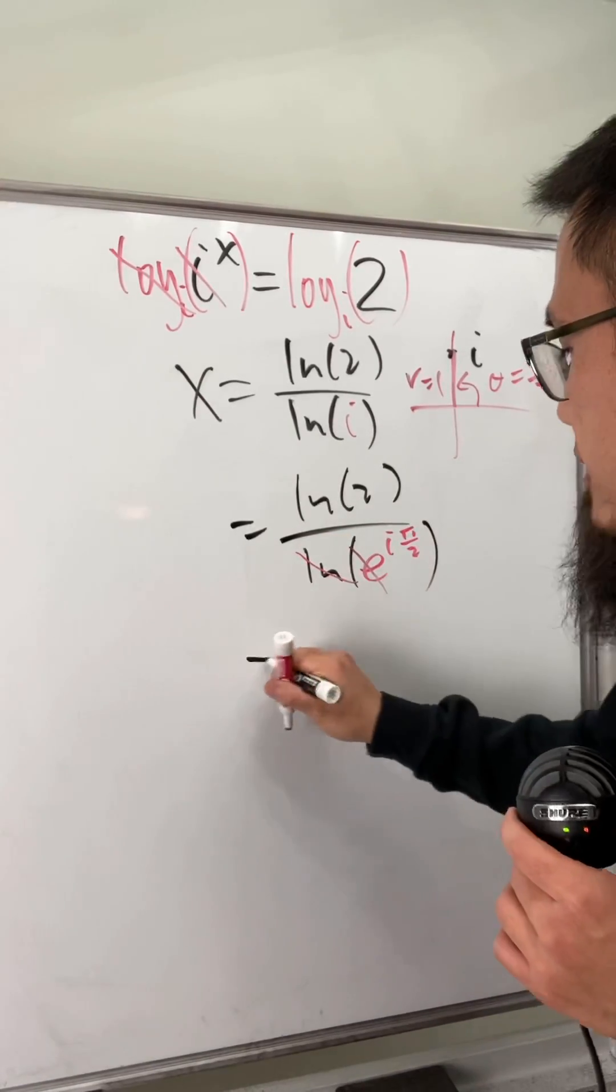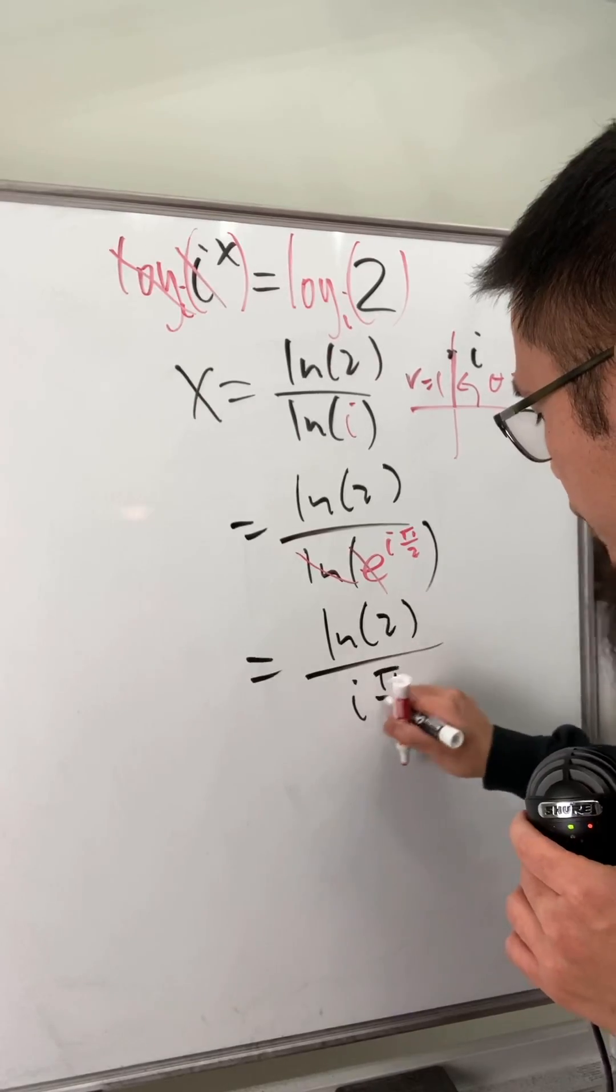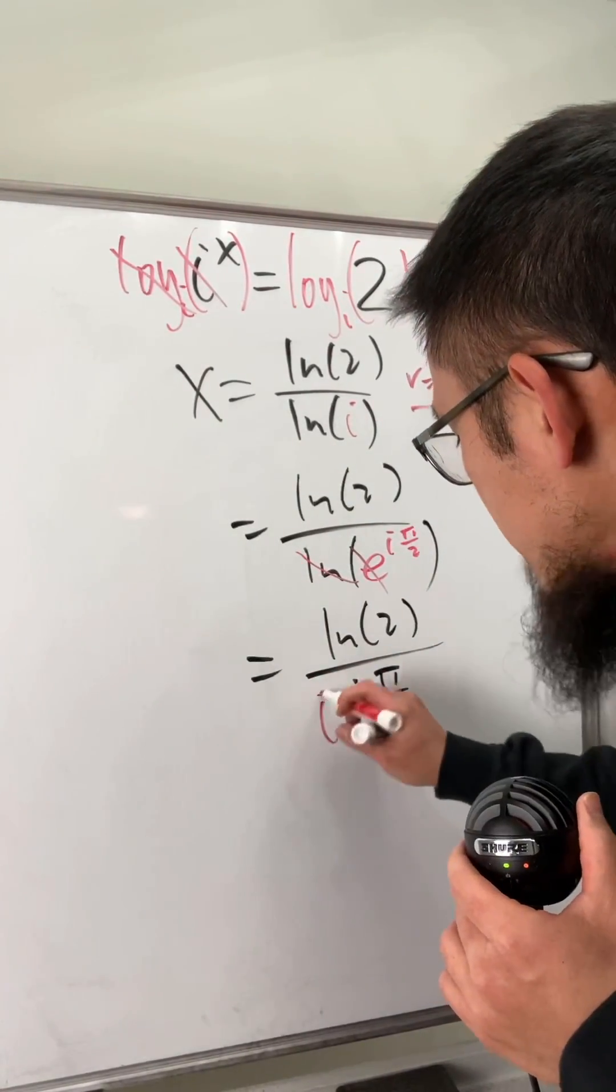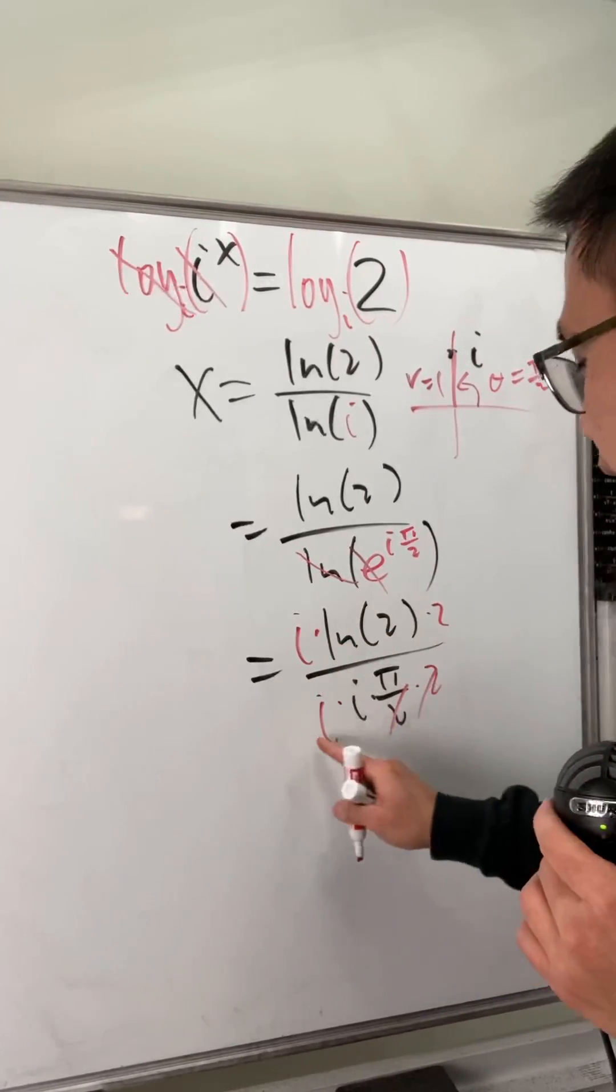We just have e^(i pi over 2). And you see this and that will cancel very nicely. And we have ln 2 on the top over just i pi over 2 right here. But I don't like i to be on the bottom. I want it to be on the top. So let's multiply the bottom and the top by i.